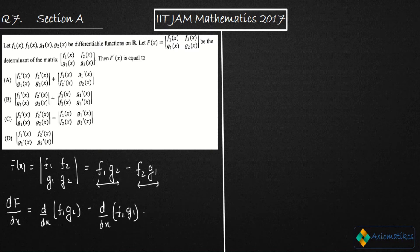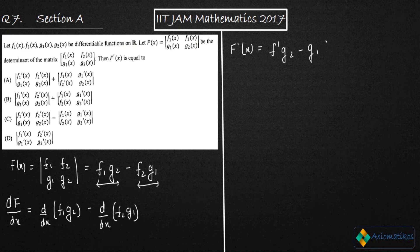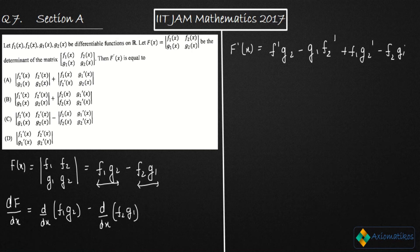After applying the product rule, F'(x) equals f1'·g2 + f1·g2' minus f2'·g1 minus f2·g1'. I have done a little bit of rearrangement here. The first two terms come from differentiating the first product, and the last two come from the second term.